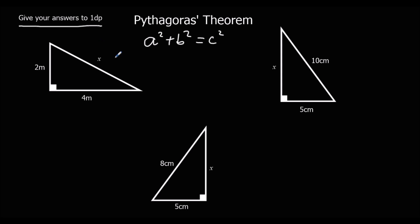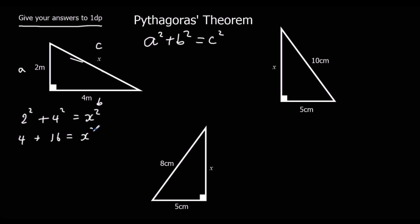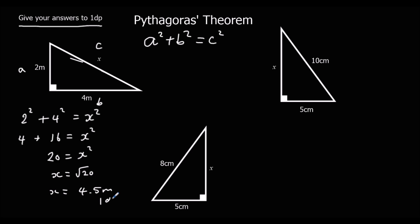Let's look at the first one. The long side is C. These two are A and B. So 2 squared plus 4 squared equals x squared: 4 plus 16 equals x squared, so 20 equals x squared. x is the square root of 20, and using a calculator, the square root of 20 to one decimal place is 4.5. So it's 4.5 meters to 1 d.p.